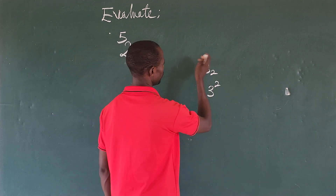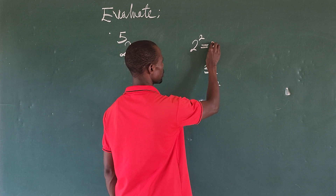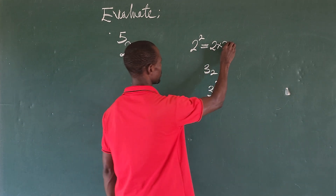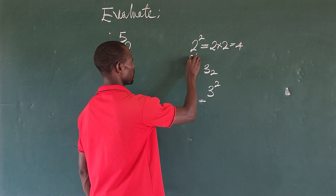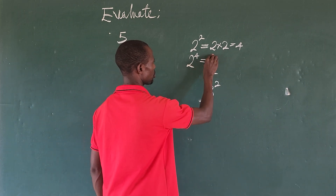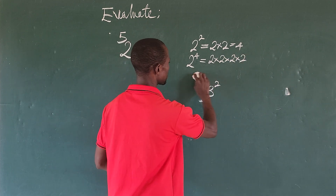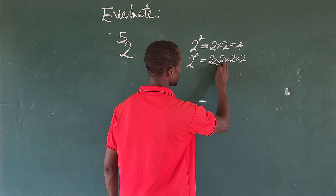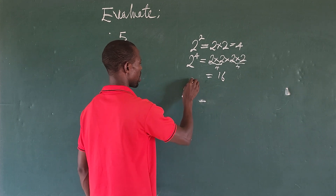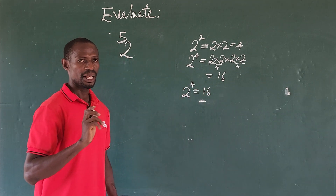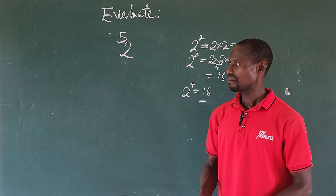If you have two to the power of two, it means two times two, and two times two gives us four. If we take two to the power of four, this is two times two times two times two. Two times two is four, and four times four gives us sixteen. So two to the power of four is equal to sixteen.